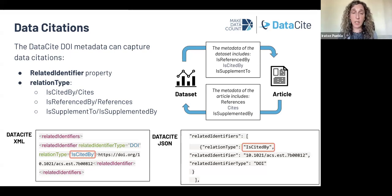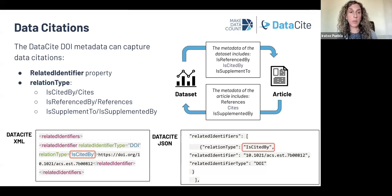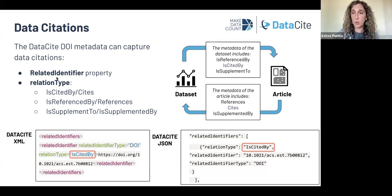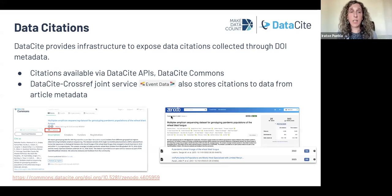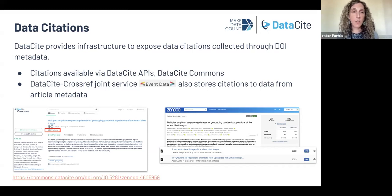Coming back to the Datasite metadata schema: we have a related identifier property that allows creating relationships between the dataset and another object with an identifier. Under this property, there is a field for the type of relationship that exists between those two objects. We use three specific relationship types to designate citations. This captures, for example, the relationship between a dataset and an article that is citing it, contributing to citation counts for the dataset. Datasite also has services to expose those data citations — they can be found through the Datasite APIs, and through a search portal called Datasite Commons, which provides citations where they exist for individual records.